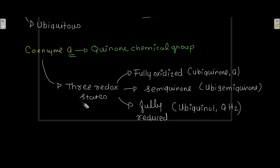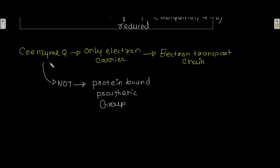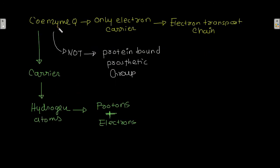Coenzyme Q is the only electron carrier in the electron transport chain that is not a protein-bound prosthetic group. All other electron carriers are protein-bound, but coenzyme Q is not. Coenzyme Q is a carrier of hydrogen atoms — that is, it carries both protons and electrons.